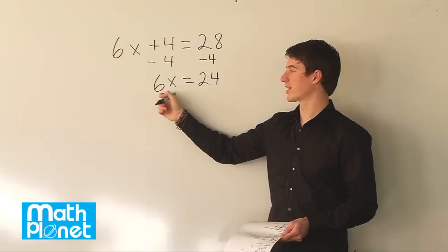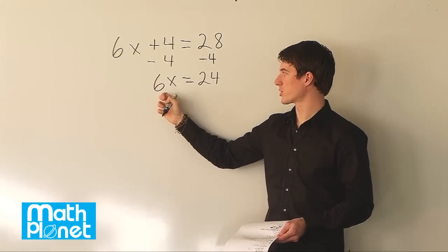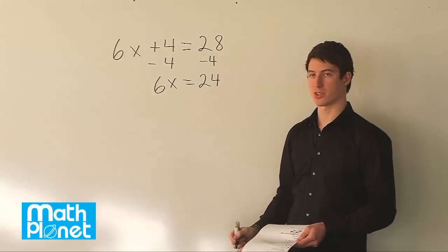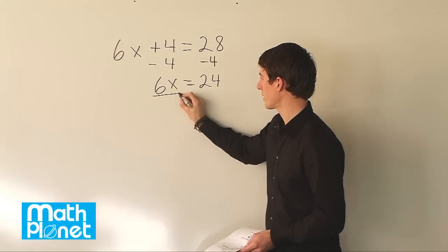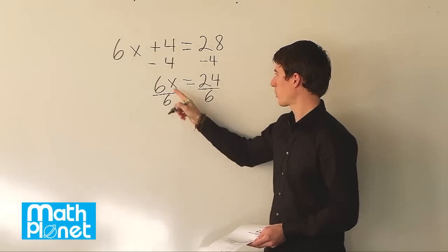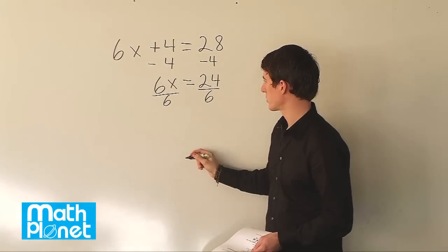And now we have this 6 times x. The inverse operation of multiplication is division, so we need to divide both sides by 6.